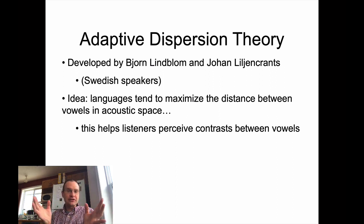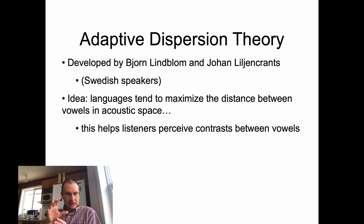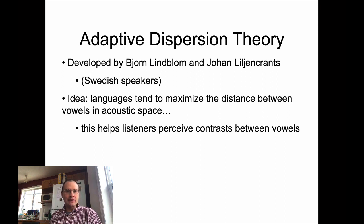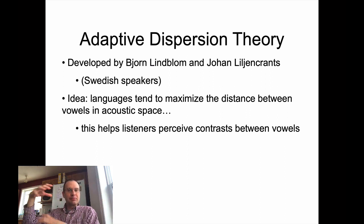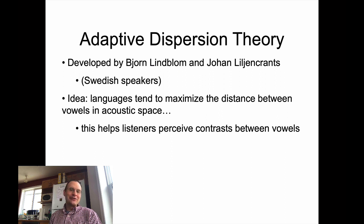You can also think about it like this: there's all this other space in the vowel space that speakers wouldn't even be using if vowels clustered together. Why just go all over there in the corner when they can just branch out and spread their wings and fly over to the low back corner of the space?